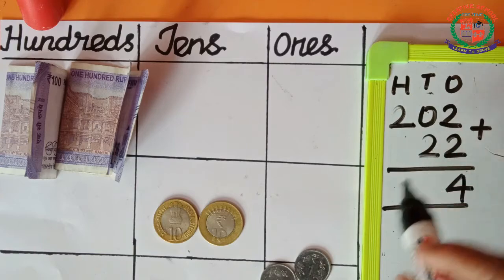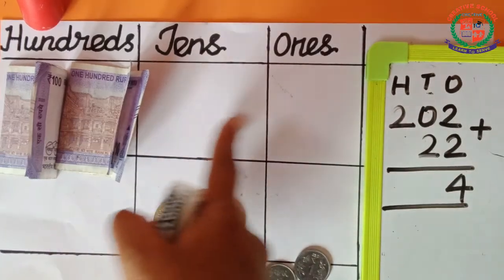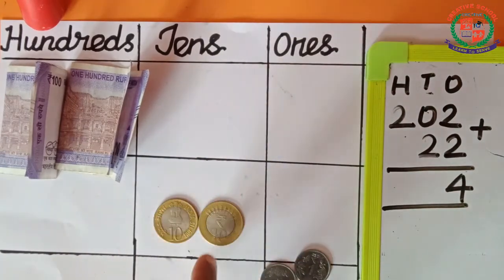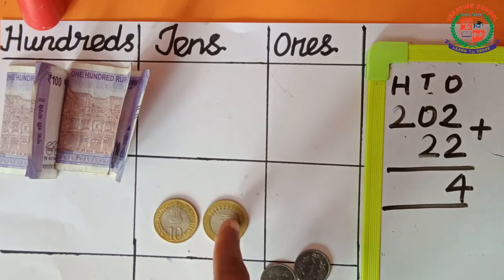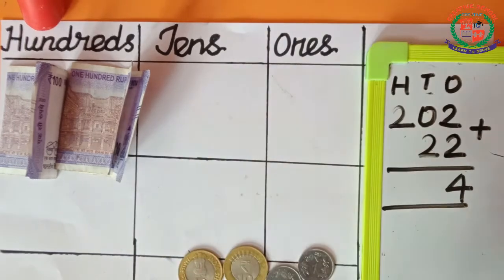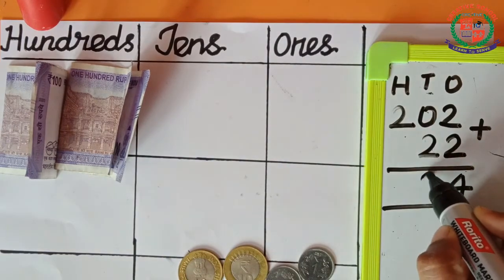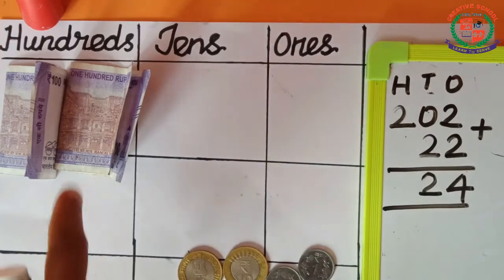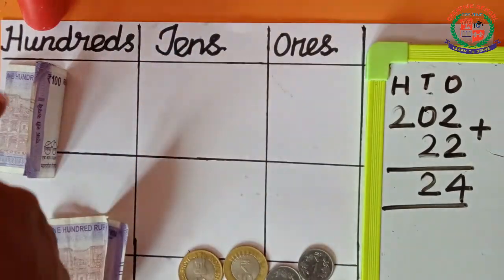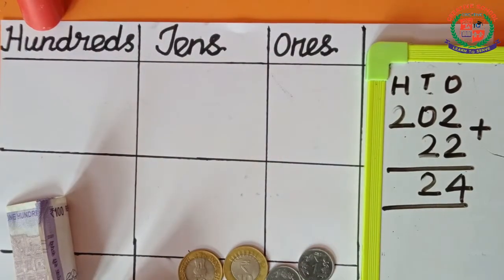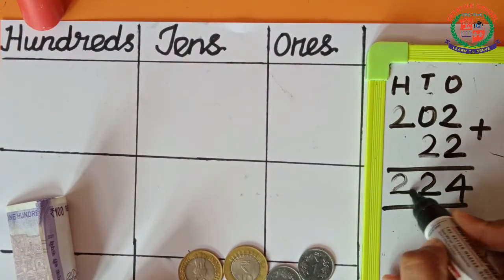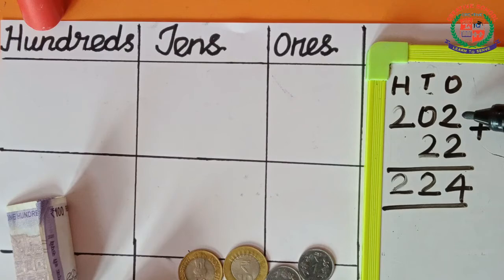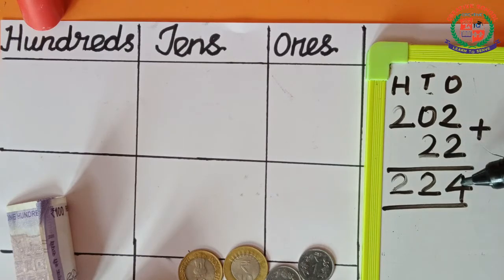Next, the 10th place. Shall we add? Here, nothing is there in the first number's 10th place. Only 2 tens are here from the second number. 1, 2 — so in the 10th place, we write the number as 2. In the 100th place, shall we add? 1, 2 — that answer is 2. So, the answer is 202 plus 22 is equal to 224.